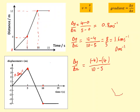So that gives me minus 8 over 5, which is minus 1.6 meters per second. So it's the same speed as before, but in the opposite direction. And the last section is not moving at all, so the velocity there is 0.